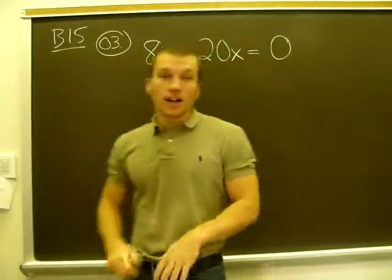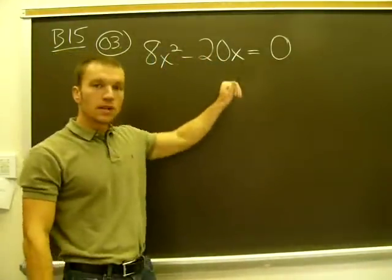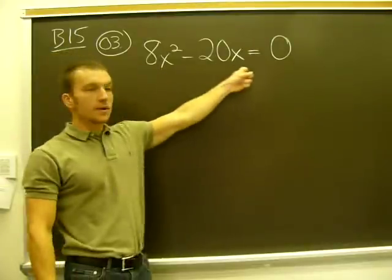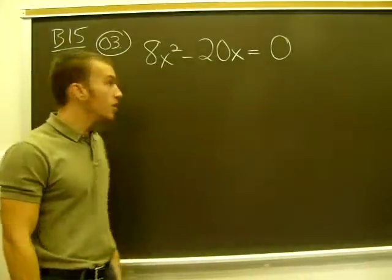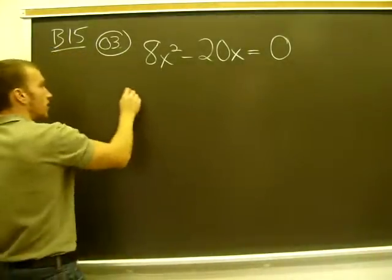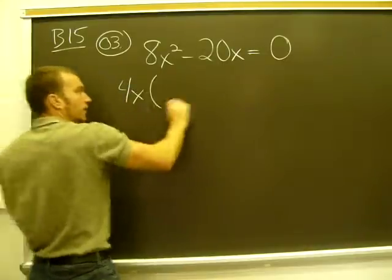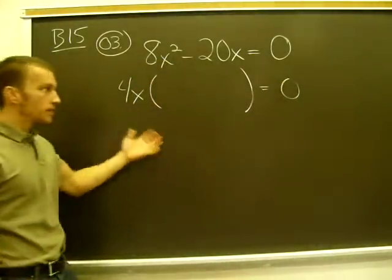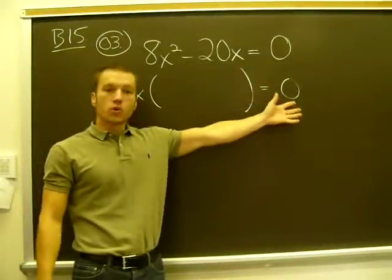In this case, there is the greatest common factor. I can take 4 and 20 and I can take x and x squared as x. So the greatest common factor would be 4x. I factor out the 4x. Make sure you rewrite your equation.